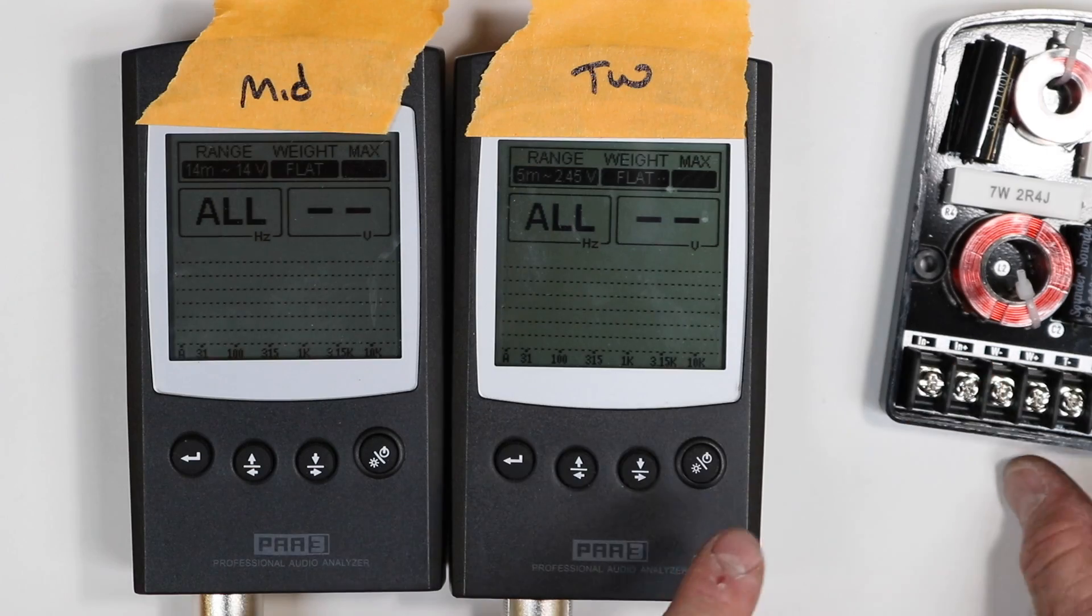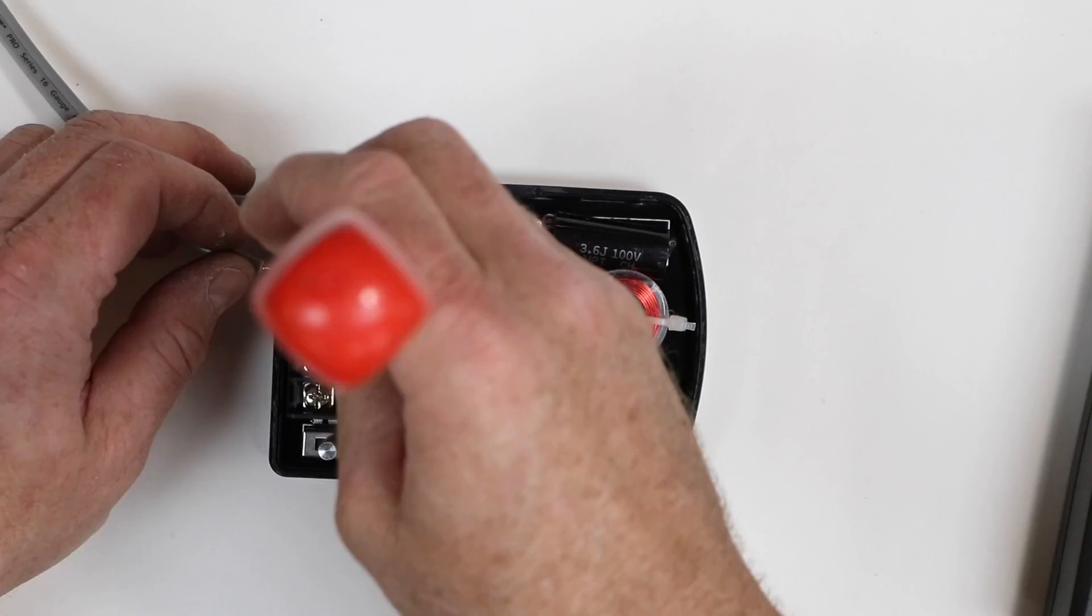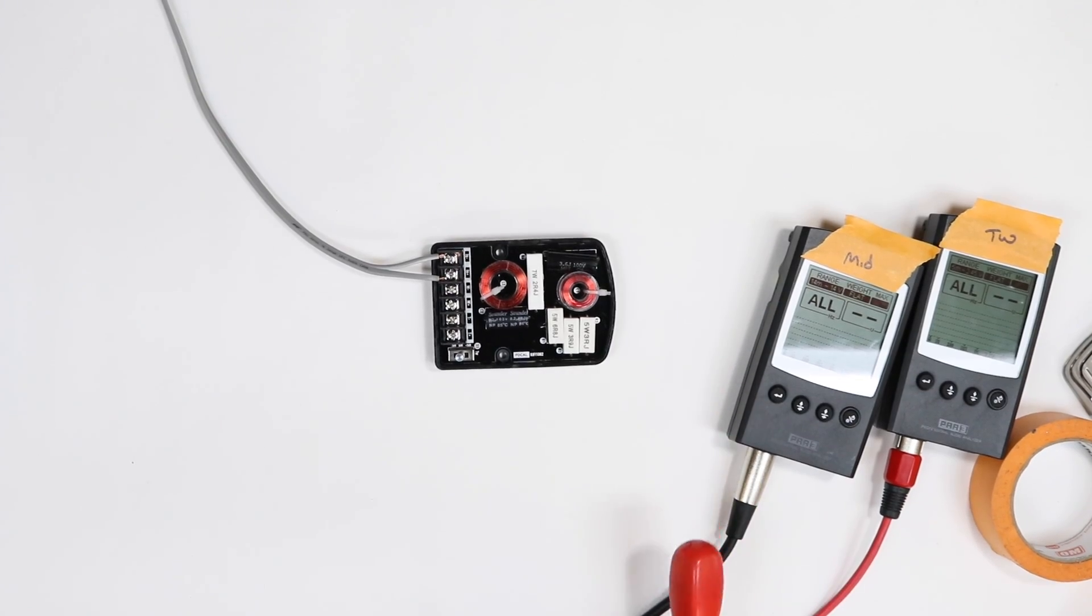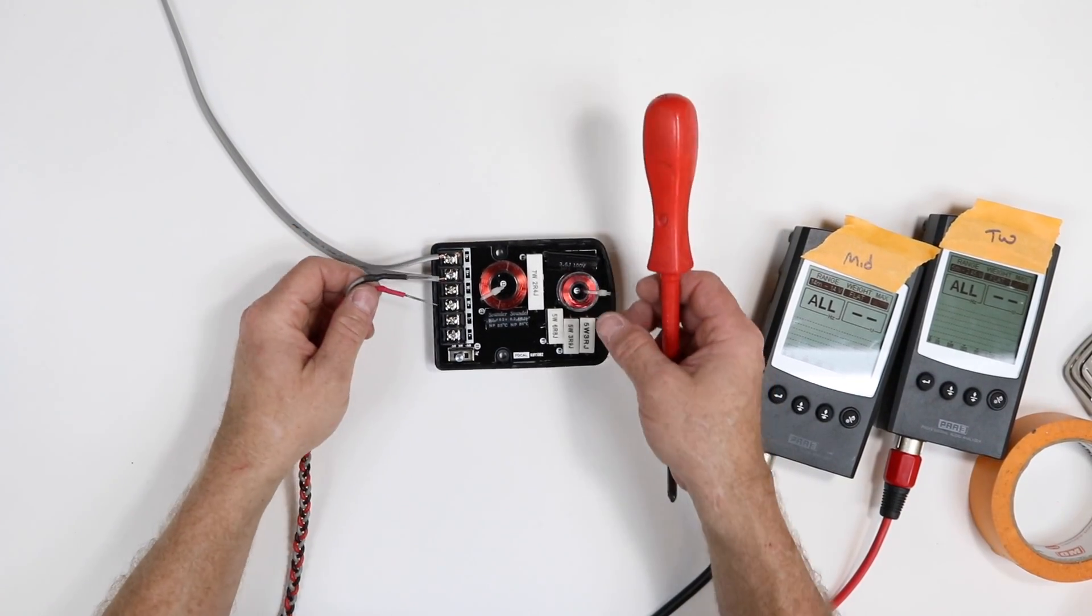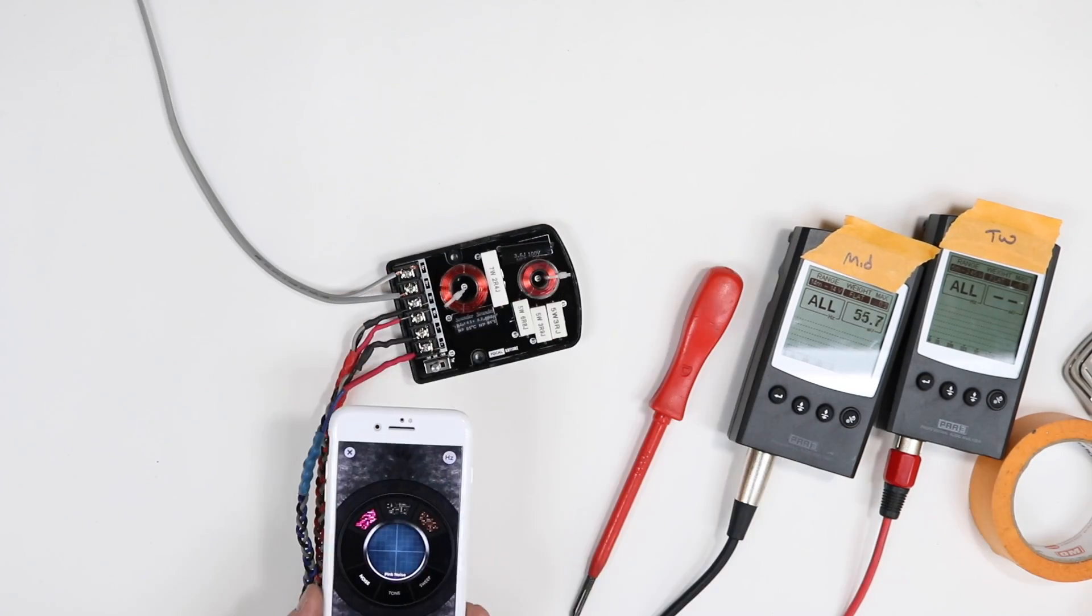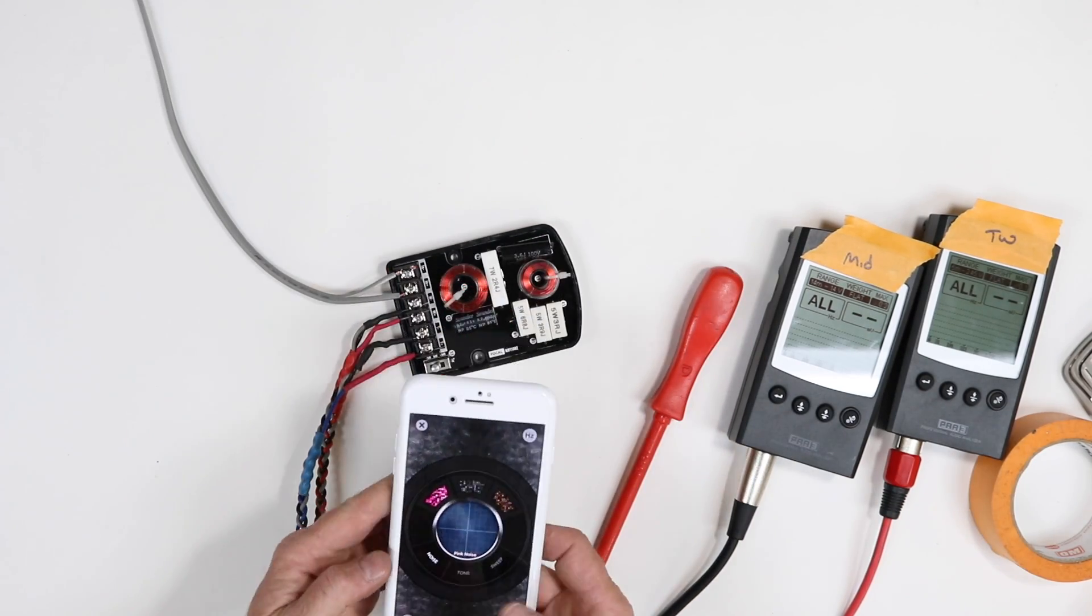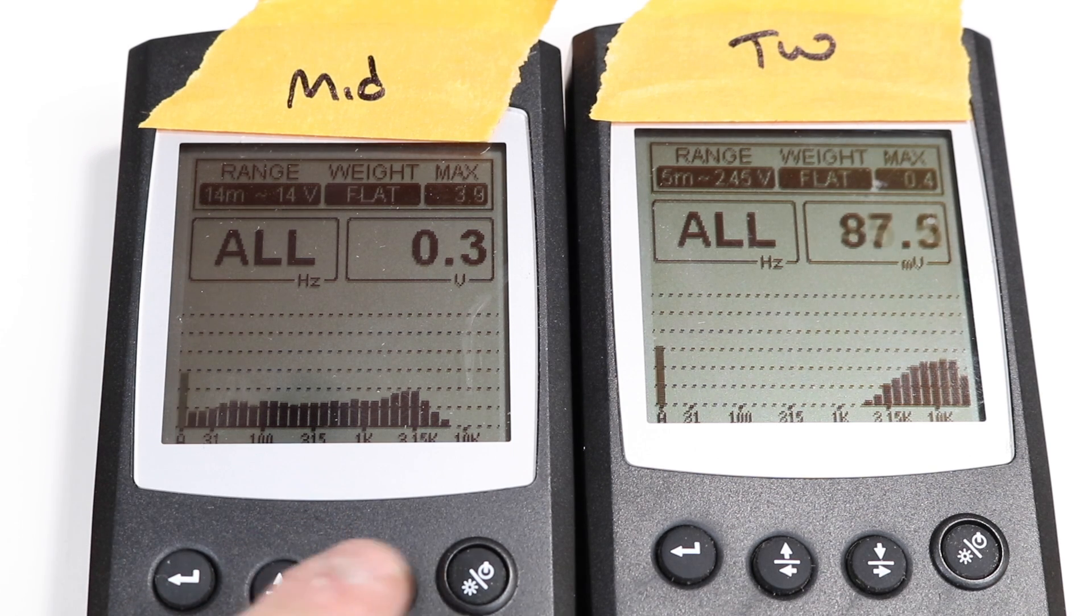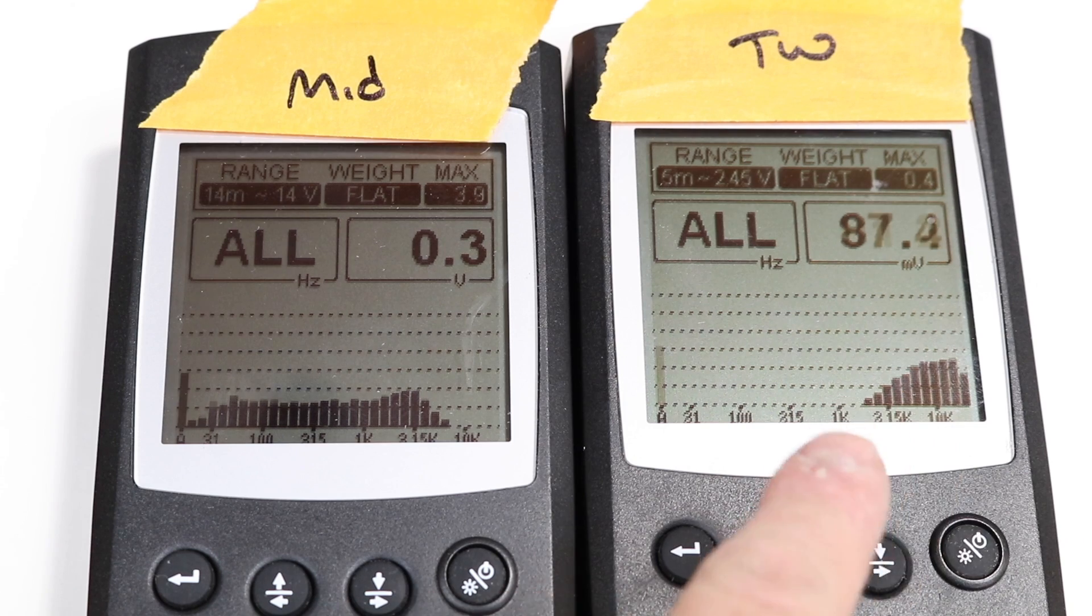Now, what we need to do is hook this up to some form of an amplifier. So we'll go ahead and take our midline and hook that up to our midrange output. And we'll take our tweeter and do the same. Now, we'll go ahead and play a pink noise.